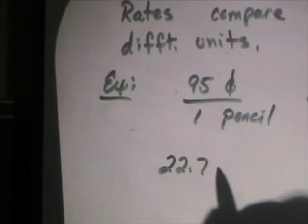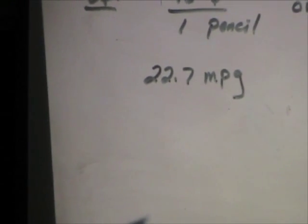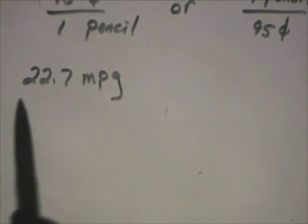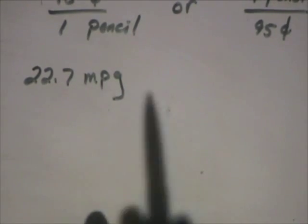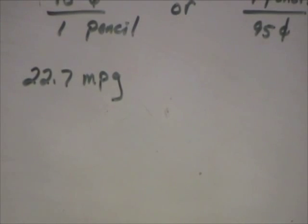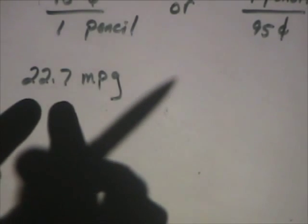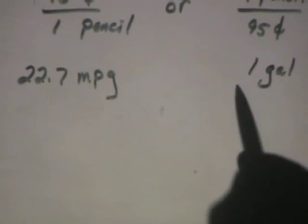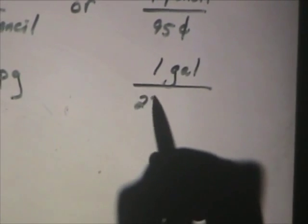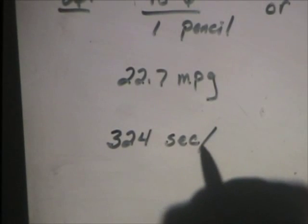Twenty-two point seven mpg. What does that stand for? Miles per gallon. Sometimes rates aren't even written out so that they look like fractions. They're just written out with abbreviated codes. Now, what would the reciprocal rate for this rate be? Miles per gallon. Remember, the per is the fraction bar. One gallon will take you twenty-two point seven miles.